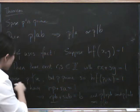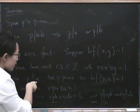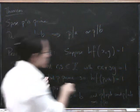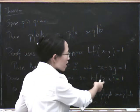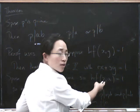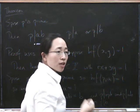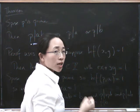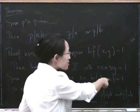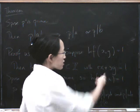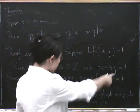All right, so suppose that p does not divide a, but p is prime. So the highest common factor of p and a has to be 1. Because if p is prime, the only possible factors of p are 1 and p. So if p doesn't divide a, then the only possible common factor is 1.